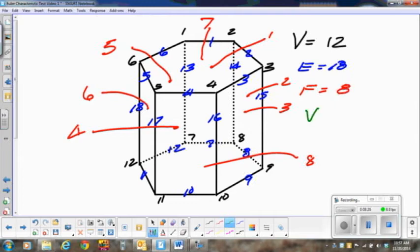If I take the vertices minus the edges plus the faces, what do I obtain? Twelve minus eighteen plus eight. Twelve minus eighteen is negative six, negative six plus eight is equal to two. So you notice each time for each of these three figures we obtain the answer two for the vertices minus the edges plus the faces.